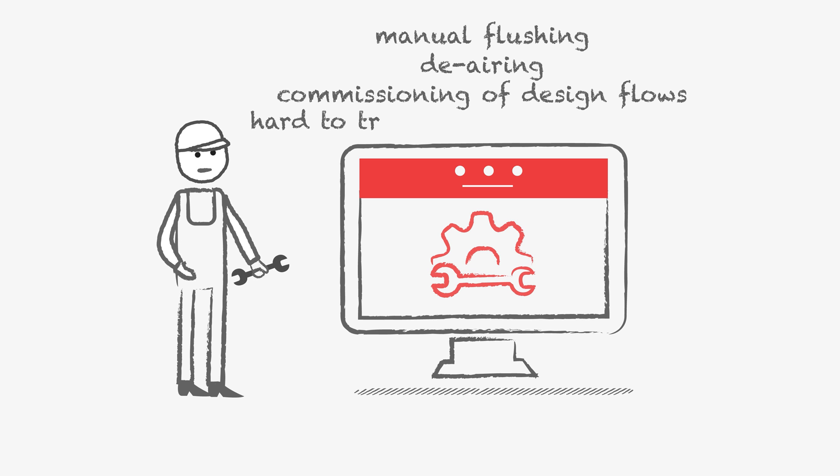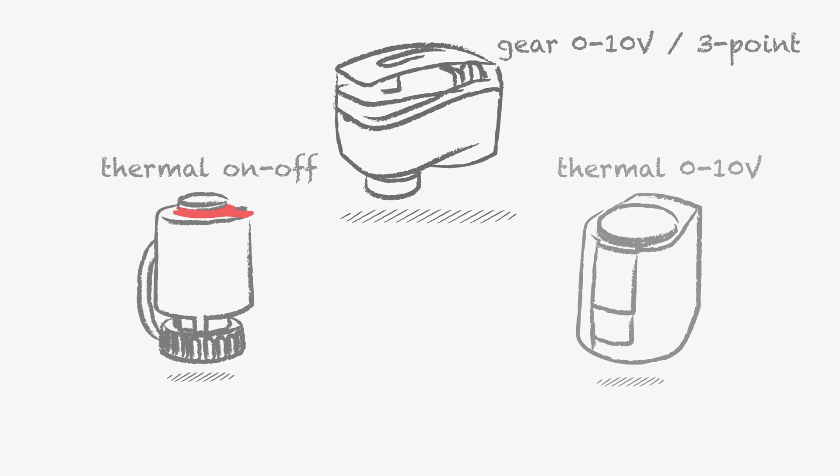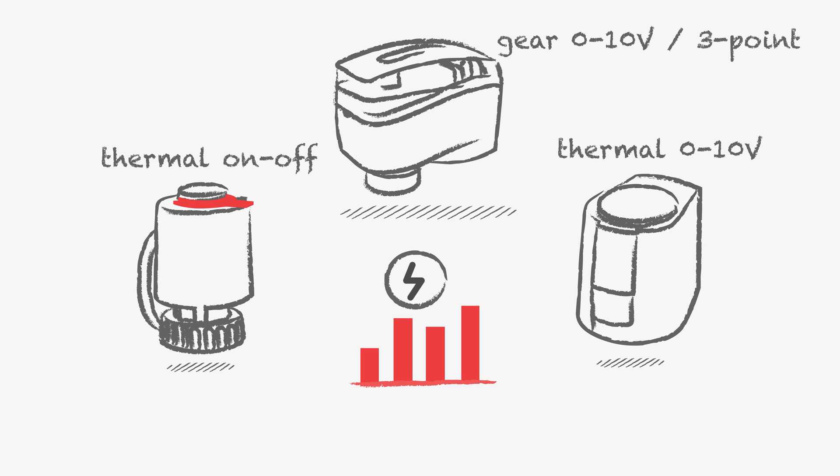It is also not easy to do troubleshooting and integrate with a building management system. Commonly used thermal or gear actuators provide no or limited transparency of energy usage and system performance. Last but not least, it's a challenge to access the systems after ceilings are closed.